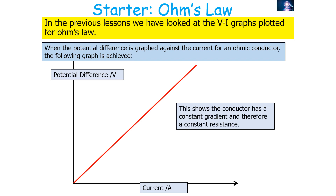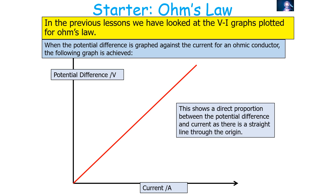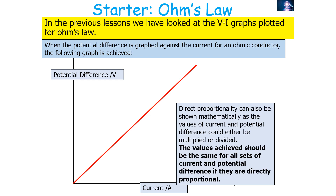This particular graph shows that the conductor has a constant gradient and therefore a constant resistance. It also shows that there's a direct proportionality between potential difference and current, because the line of best fit is a straight line through the origin. Direct proportionality can also be shown mathematically, as the values of current and potential difference could be multiplied or divided by each other, and the value achieved should be the same for all sets of values.